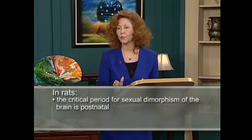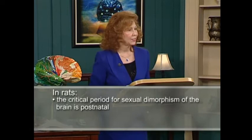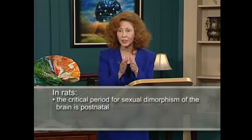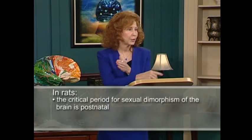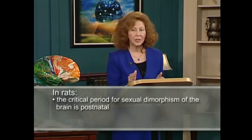So what is the evidence of sexual dimorphism of the brain? As with other questions in this course, we're going to look at experimental data from animals and also clinical research from the clinic. Most research in this area is done on rats, and there's actually a reason for that. The critical period for sexual dimorphism in the rat is postnatal — it occurs after birth — which means we can manipulate the hormonal environment during the critical period much easier than we could if it occurred in utero.